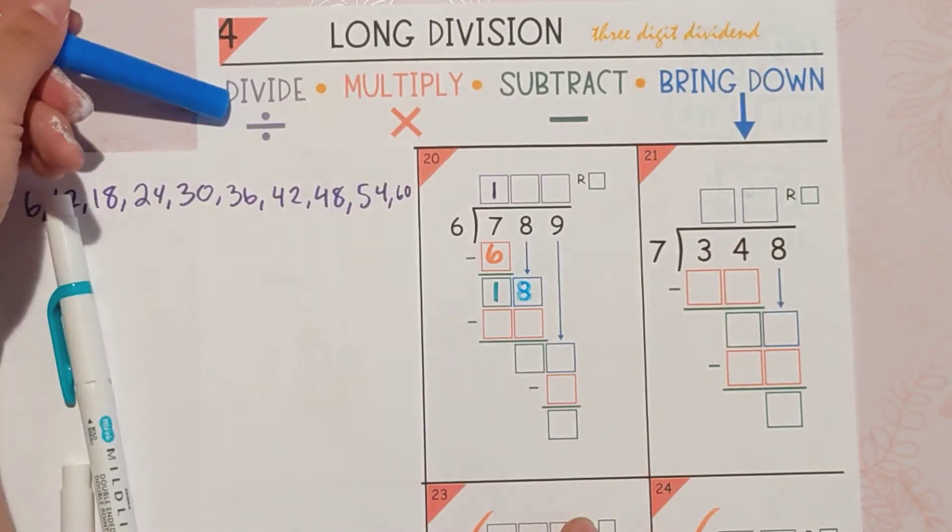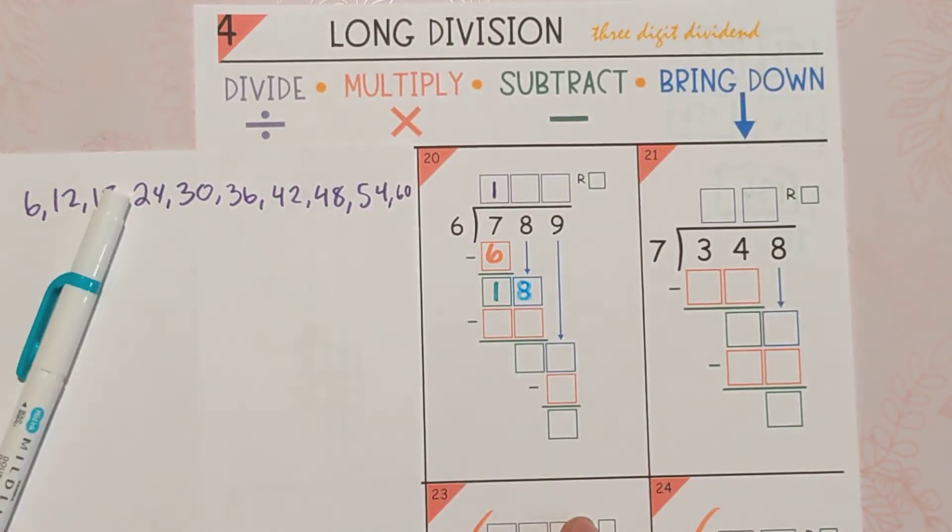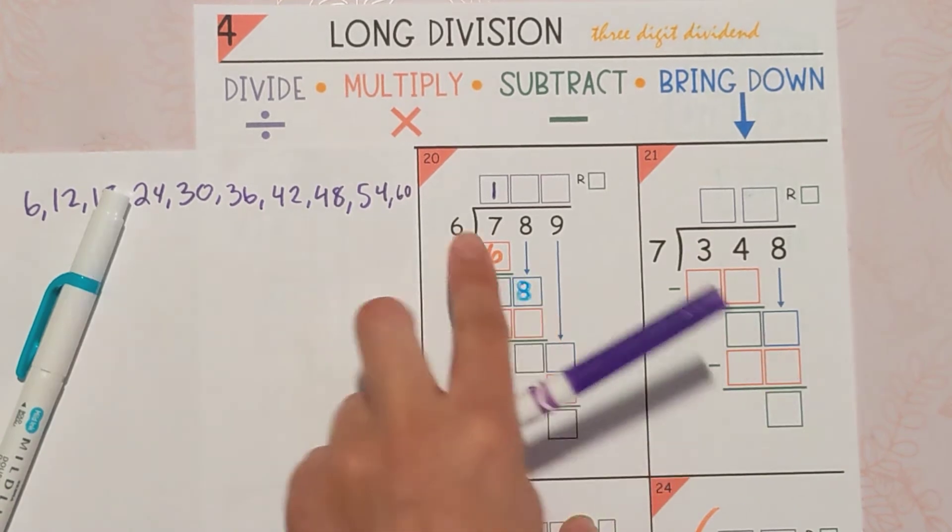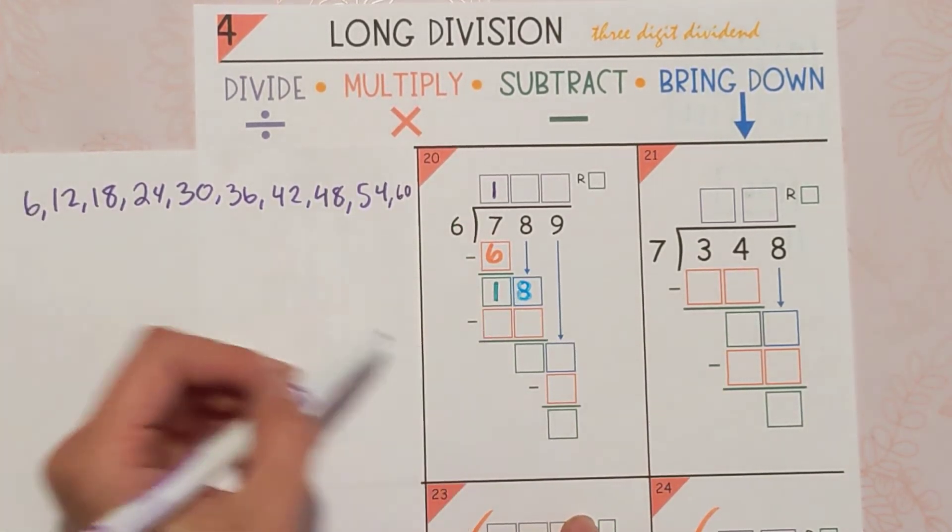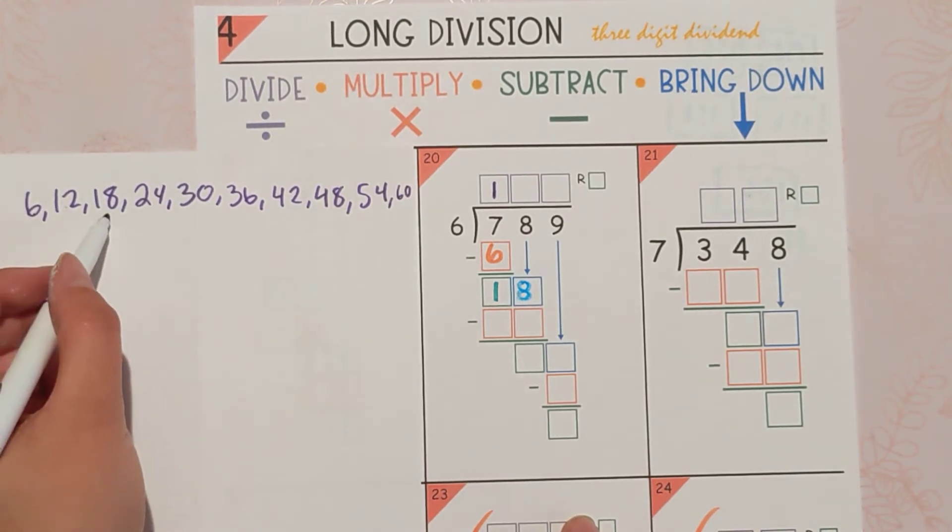Now we're ready to divide again. So, we're going to do 18 divided by 6. How many times can 6 go into 18 without going over? 1, 2, 3 times.